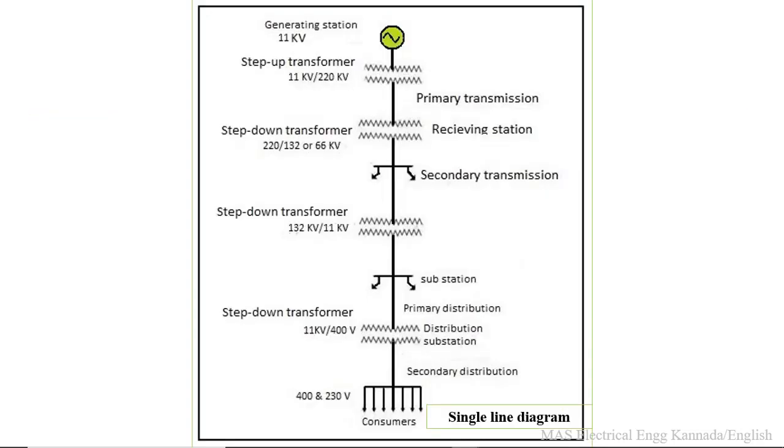This is the schematic diagram or single line diagram. It shows how it works. This symbol that is showing is called the generator symbol. Generation is always done with generators at a voltage of 11 KV.